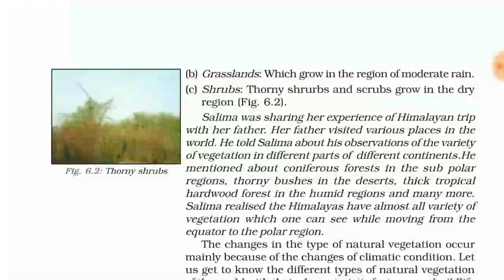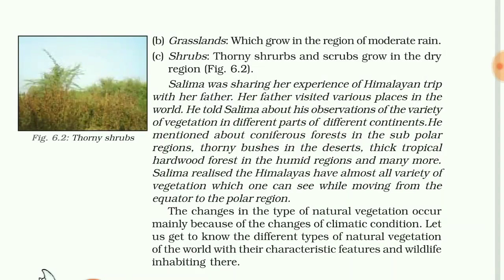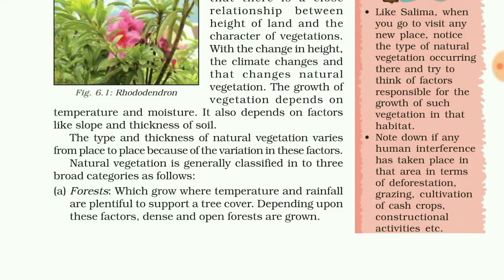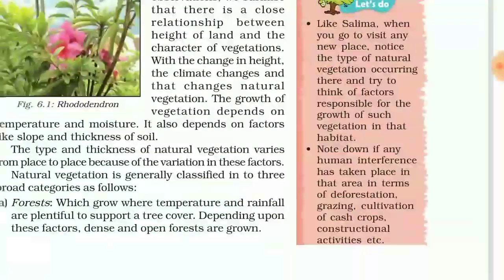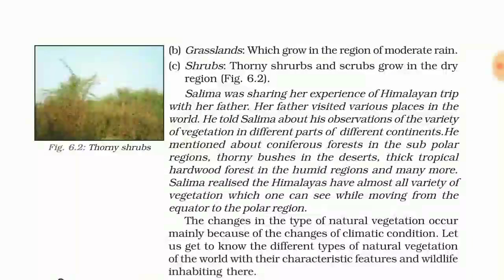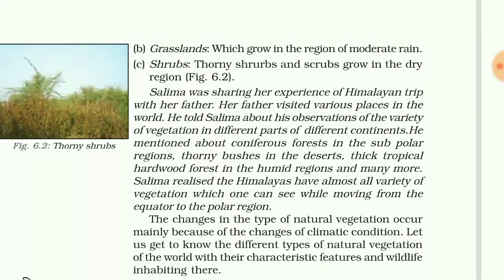The second category is grassland, which grows in regions of moderate rain. The third category is shrubs, which grow in dry regions. On the basis of temperature and moisture, natural vegetation has been categorized into these broad categories.